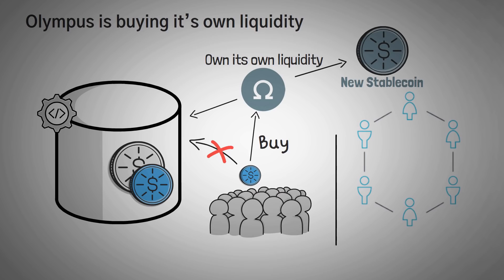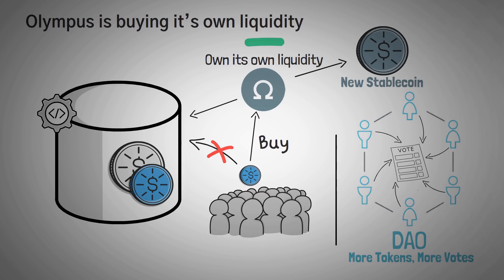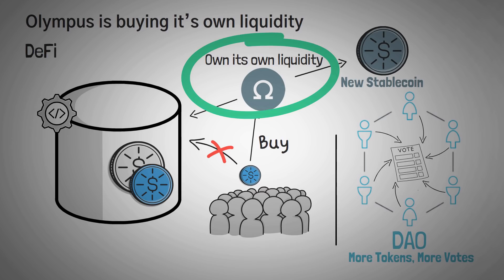Changes long-term to the protocol can be decided upon by members of a DAO. A DAO is a crypto term for an organization where members who hold the token get to propose and eventually vote on the changes that happen — the more tokens you hold, the more votes you get. This idea of a protocol owning its own liquidity is the main idea of DeFi 2.0 and has actually caused many new projects similar to Olympus DAO to be formed.